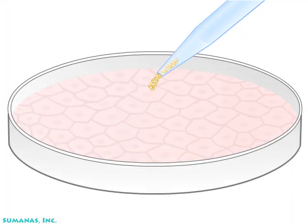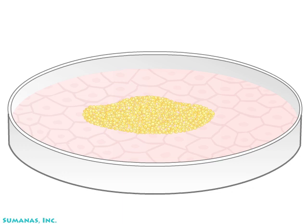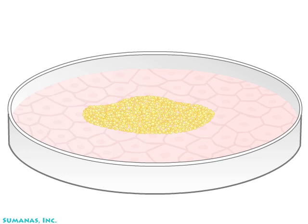Under appropriate culture conditions, these embryonic stem cells divide or self-renew, and the cell mass grows. Sometimes, pockets of cells will stop dividing and begin to differentiate spontaneously.